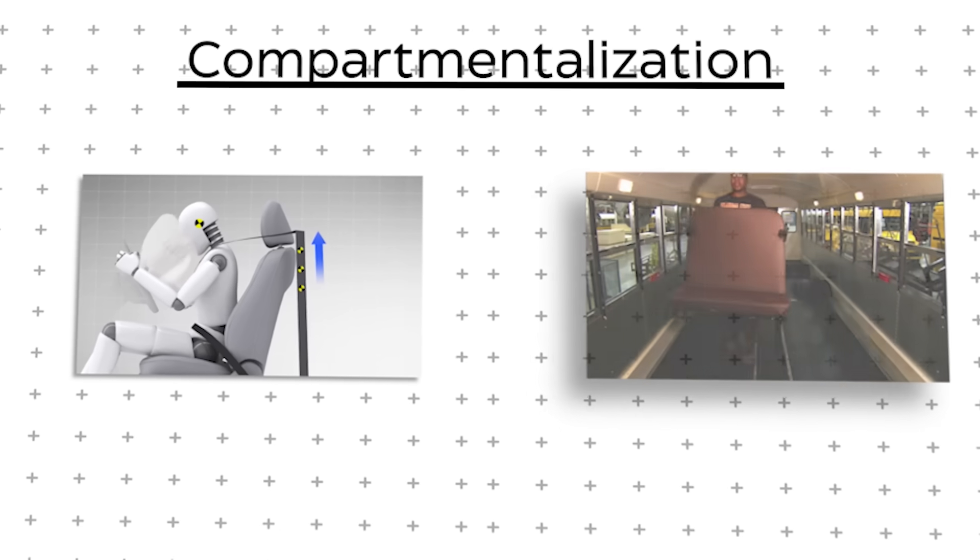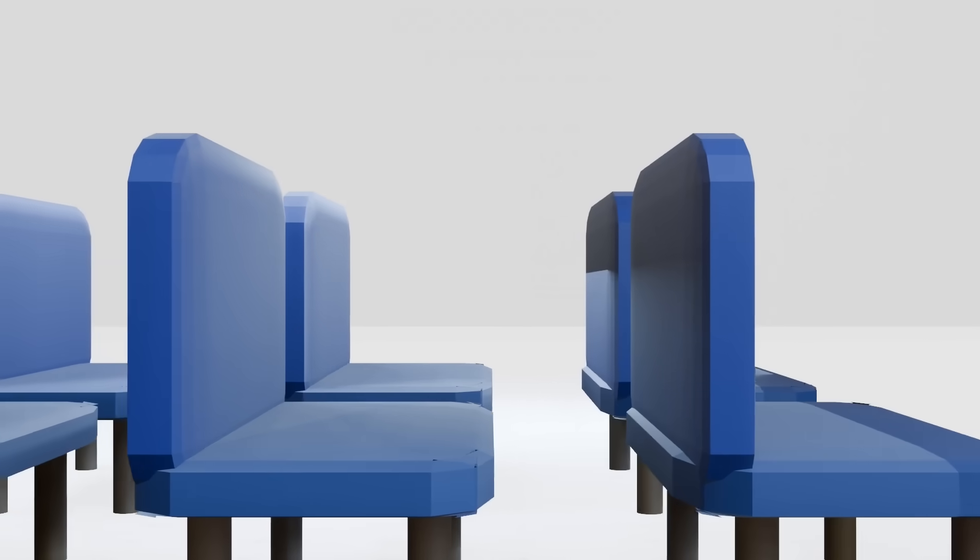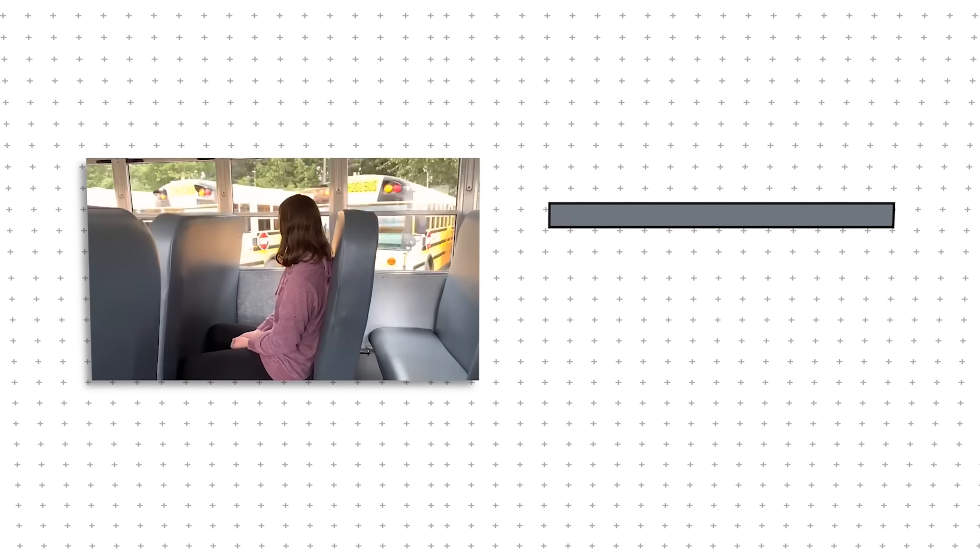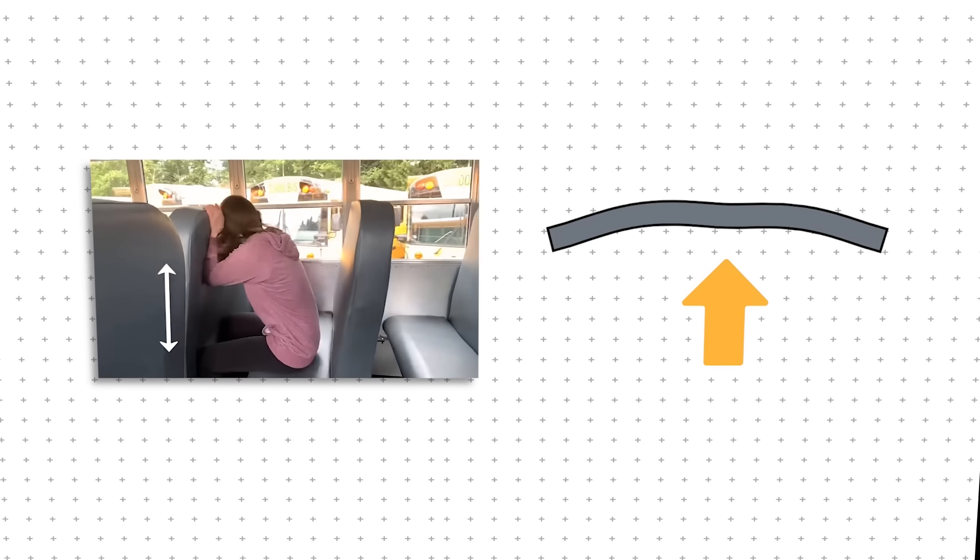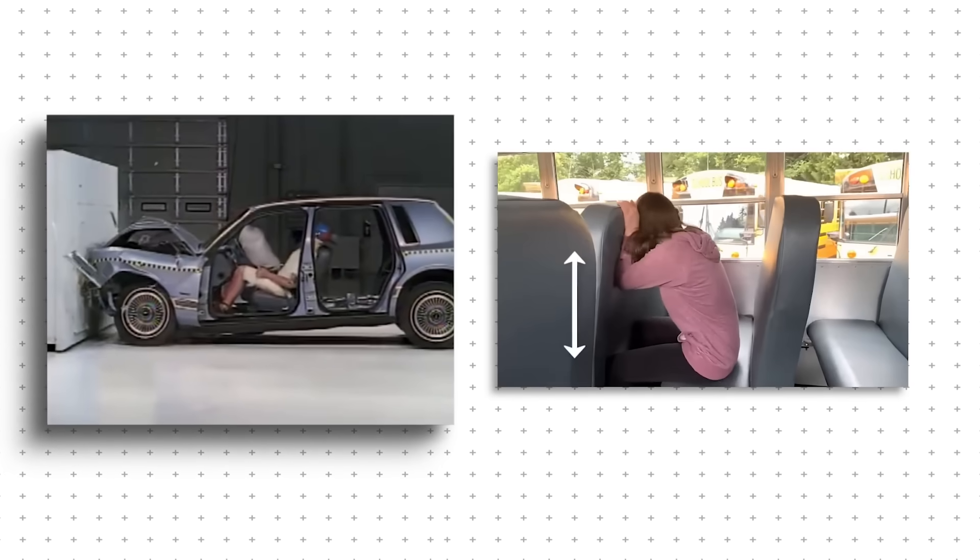Instead of relying on seatbelts to keep passengers in place, engineers design the entire bus interior as a crash protection system. High-backed, closely spaced, energy-absorbing seats create a series of padded compartments. In a collision, instead of being thrown forward into hard surfaces, students collide into a flexible, cushioned barrier that absorbs impact. Unlike seatbelts, which only work when properly worn, compartmentalization is passive.